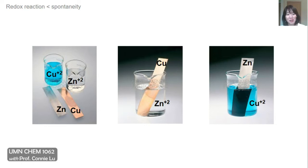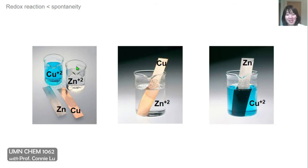These figures show an experiment we can conduct to see which of these metals, zinc or copper, will transfer electrons to each other's salts in a spontaneous way. We have copper and zinc sulfate dissolved in water, and they are in the plus two oxidation state. The copper plus two is a nice blue color and the zinc plus two is colorless. We can set up two different experiments where copper metal is immersed in the zinc plus two solution and zinc metal is immersed in the copper plus two solution.